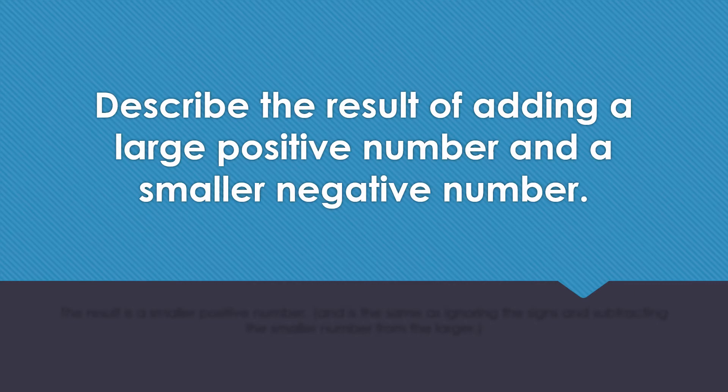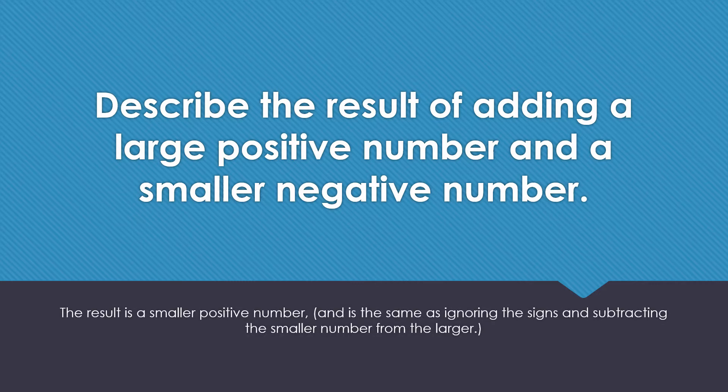Describe the result of adding a large positive number and a smaller negative number. The result is a smaller positive number and is the same as ignoring the signs and subtracting the smaller number from the larger number.